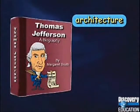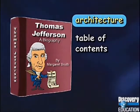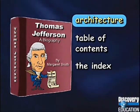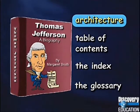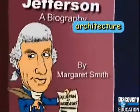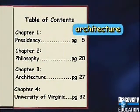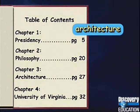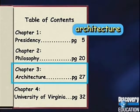In what section would you look to find a chapter about architecture — the table of contents, the index, or the glossary? You would find a chapter about architecture in the table of contents. The table of contents is located in the front of the book. It lists the names of the chapters and the page numbers where each chapter begins. This table of contents says that architecture is covered in chapter 3.